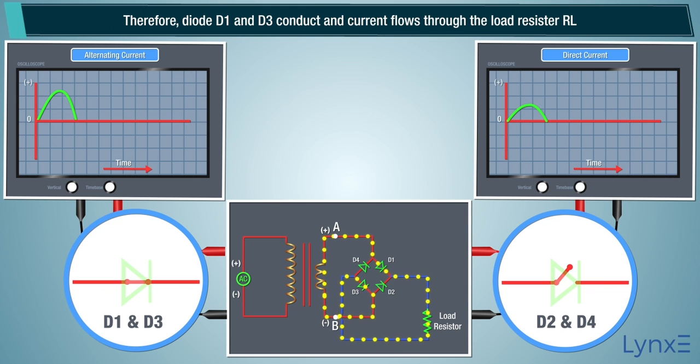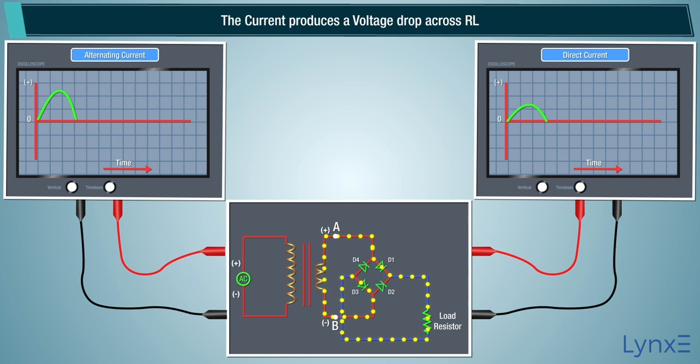Therefore, diodes D1 and D3 conduct and current flows through the load resistor RL. The current produces a voltage drop across RL.